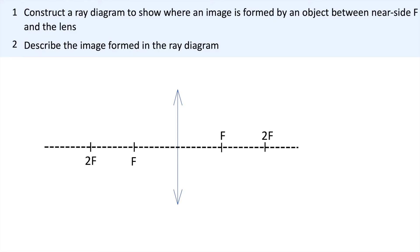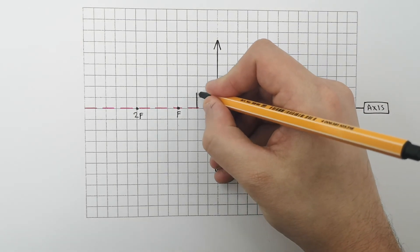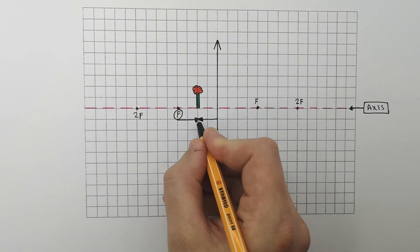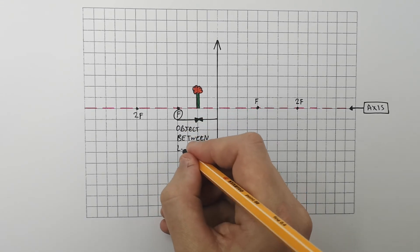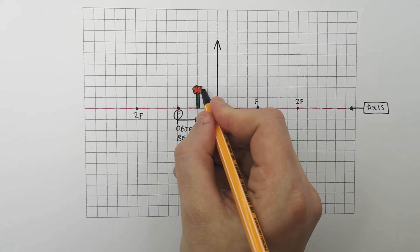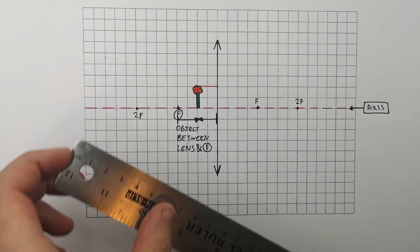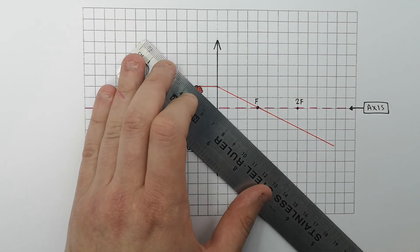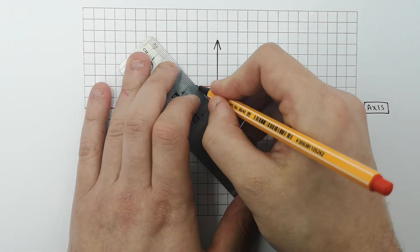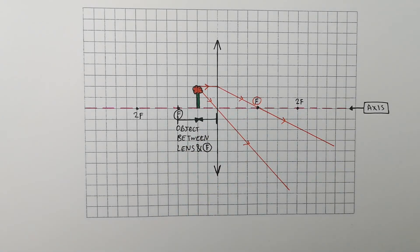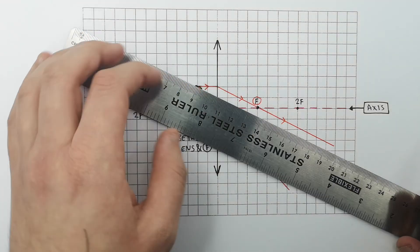This is the problem you will learn how to solve. Press pause to attempt it. The method and the answer will follow. This object is now sat on the axis between f and the lens — between the near side principal focus and the lens. Light is reflected from the top of the object and this incident ray is parallel to the axis. It then refracts through the convex lens and passes through f, the far side principal focus. This ray also travels through the center of the convex lens. As you can see, the refracted rays do not meet, so no real image can be formed.